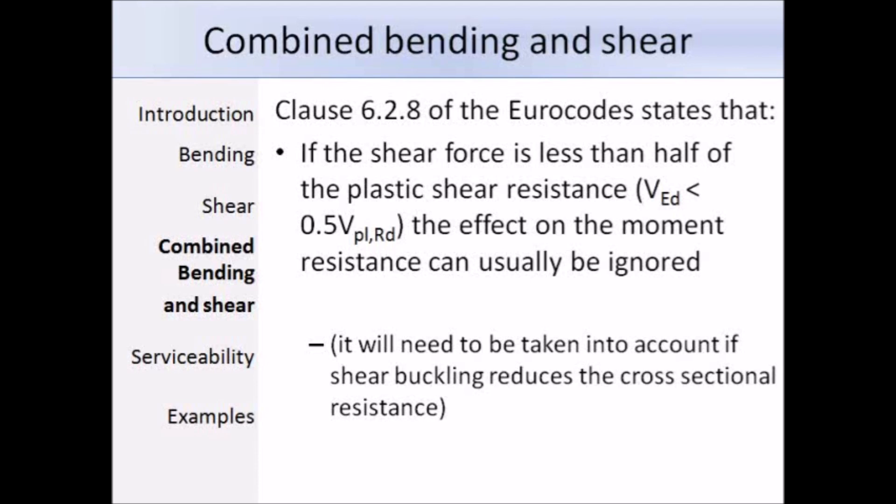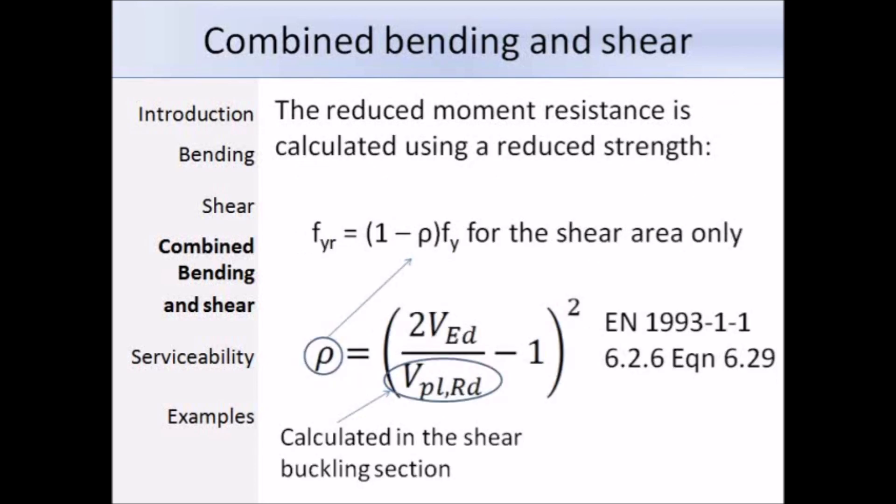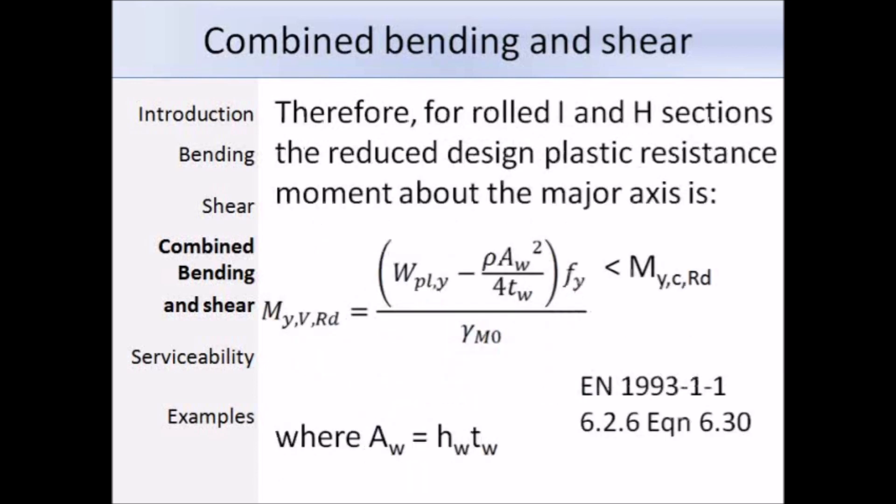If the design shear force exceeds 50% of the design shear resistance, the design moment should be calculated using reduced yield strength, f_y,r, which is equal to (1 minus rho) times the yield strength. We will have already determined the yield strength, f_y, from the section classification. We need to work out this term rho, which is given by expression 6.29: (2 times the design shear force over the design plastic shear resistance, minus 1) squared. Thus, for rolled I and H sections, the reduced design resistance moment of the section about the major axis, M_y,V,Rd, will be given by expression 6.30 in Clause 6.2.6.